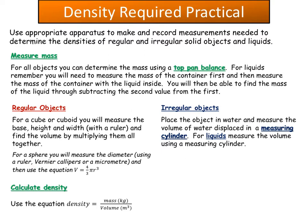For a sphere, you measure the diameter using a ruler or vernier calipers — you could even use a micrometer — then use the equation V = (4/3)πr³. Remember that r is the radius, so you divide your diameter by two. For any regular shape, you use the appropriate maths equation to calculate the volume.